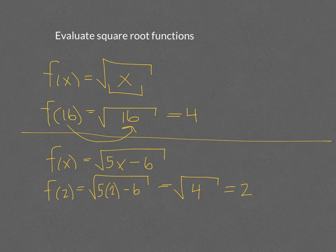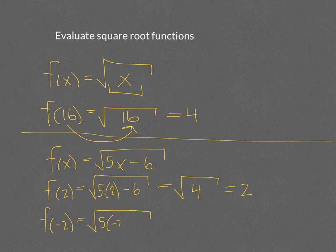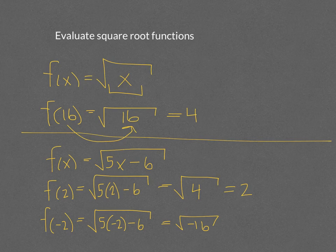If we want to find f(negative 2), we plug in negative 2: 5 times negative 2 minus 6 gives us negative 16. That's a problem because we cannot have a negative inside our square root, so f(negative 2) is undefined.